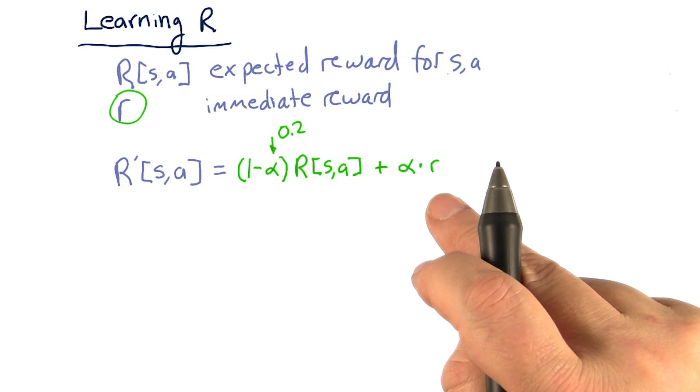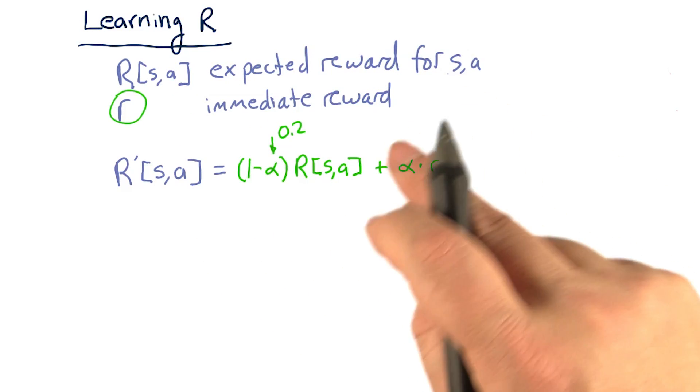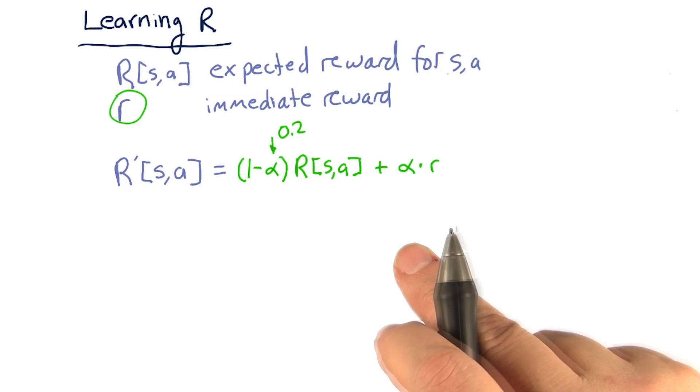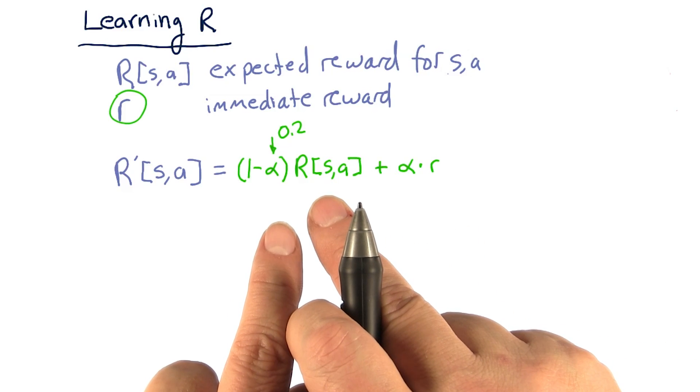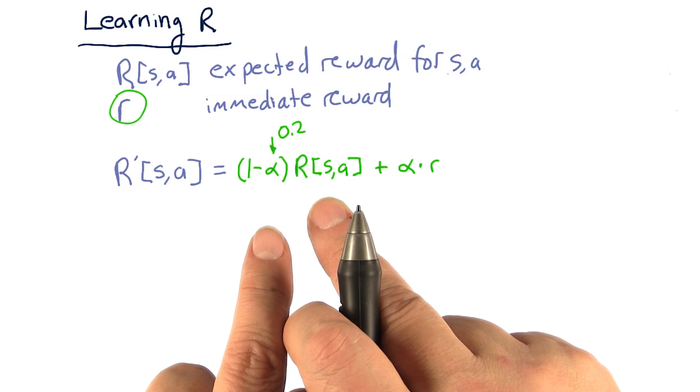So it's alpha times little r, which is our immediate reward, or our new best estimate of what the value should be, plus what the value was before, times 1 minus alpha.